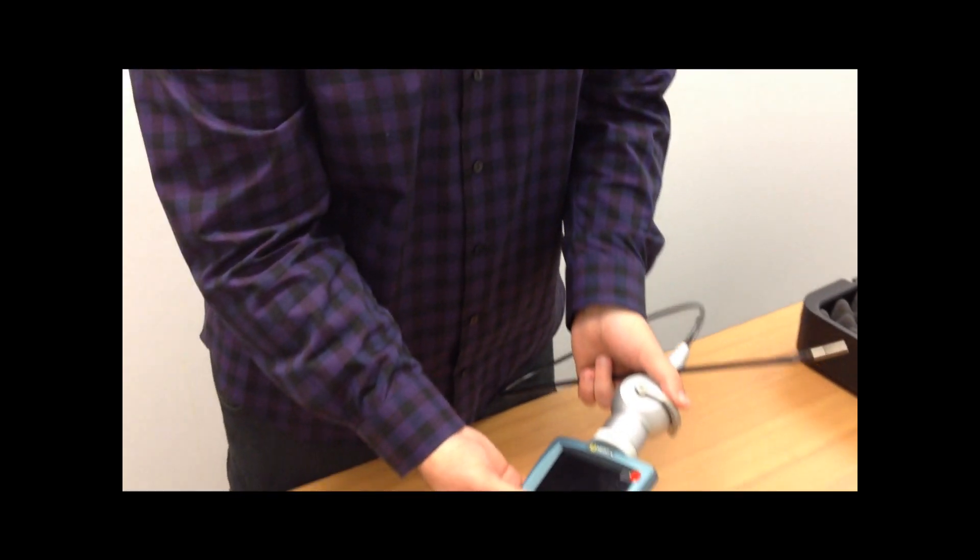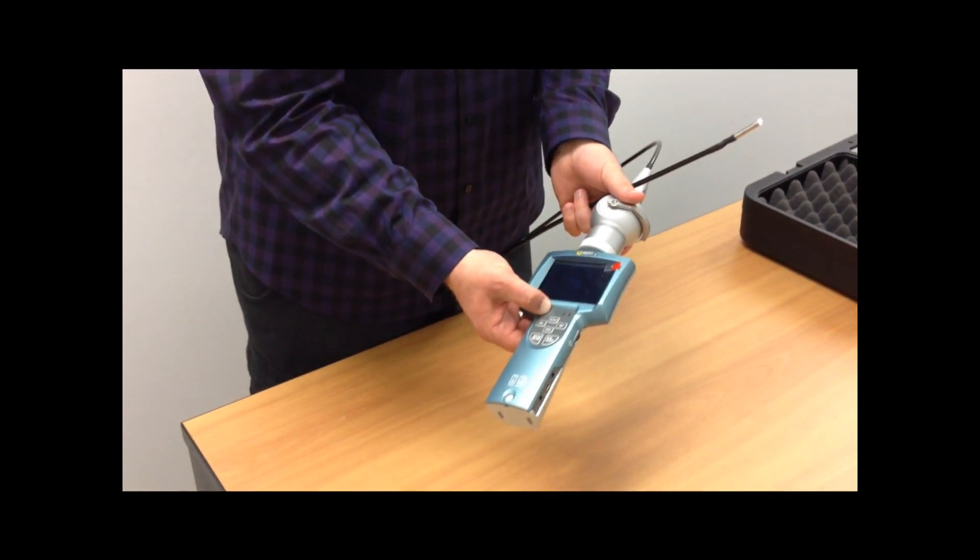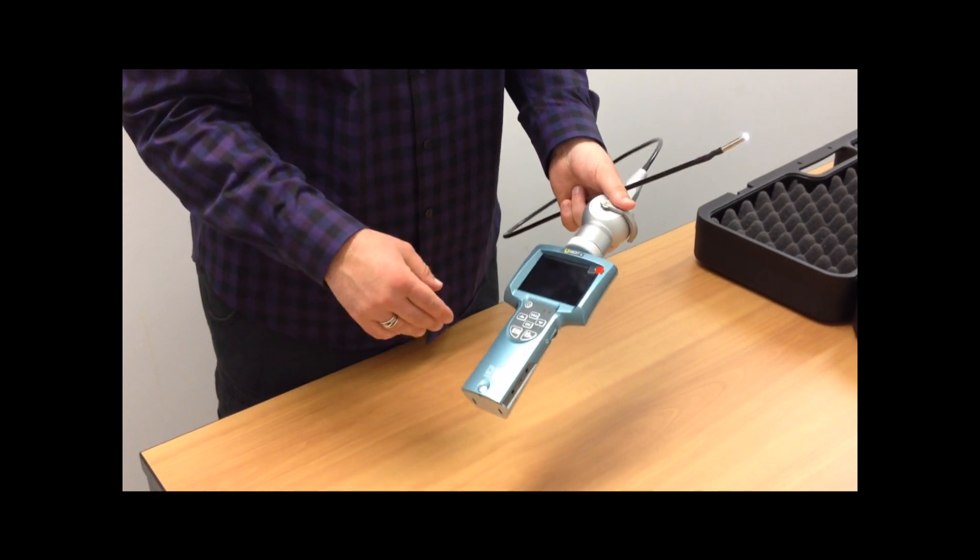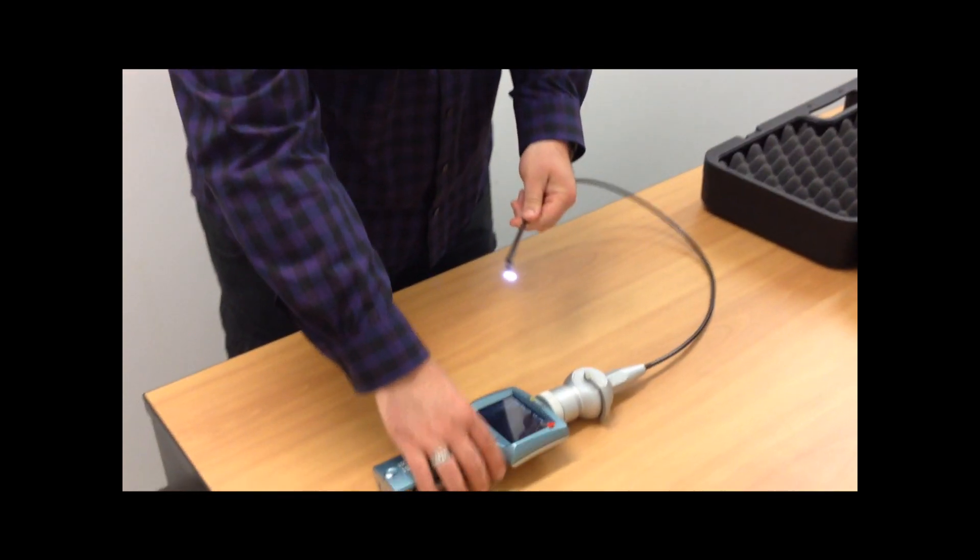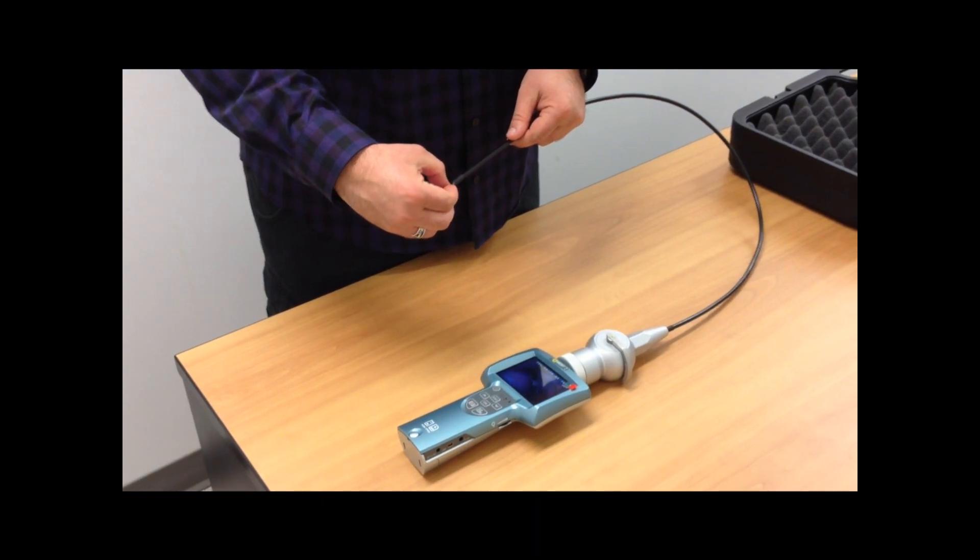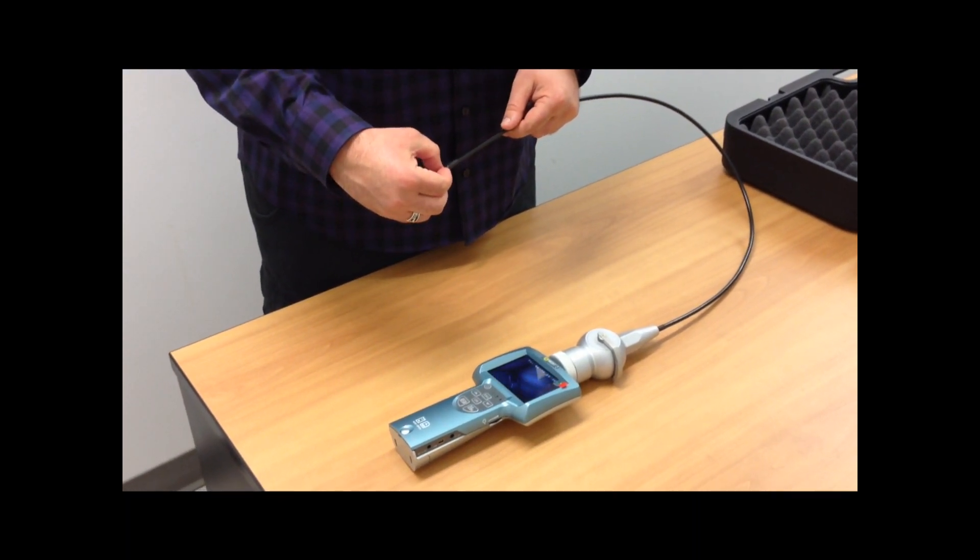Setup is really simple. Power button on the top of the monitor. This will turn on the scope itself and you'll see that you'll have a live video image starting right away. This will allow you to do your inspections and then you can also document them for customers.